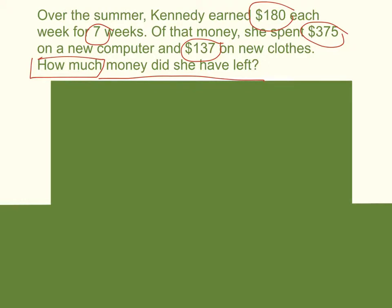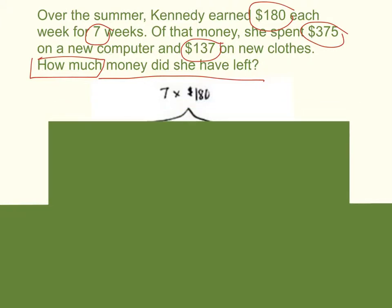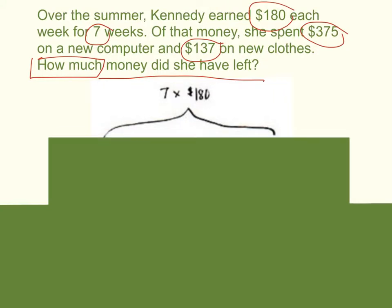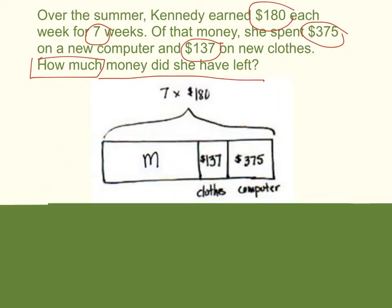First, let's create our tape diagram to show how we can visually see this problem. I know that she worked for seven weeks, earning $180 a week — that will be the total amount on my tape diagram. Then I know that she spent $137 on clothes and $375 on a new computer. So that is shown here: $375, $137 on the clothes and computer, and this is the amount of money she will have left.